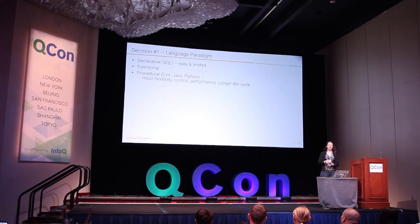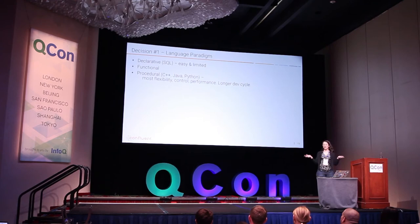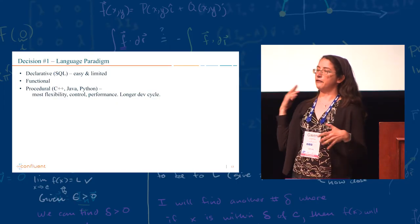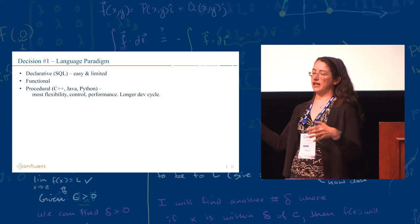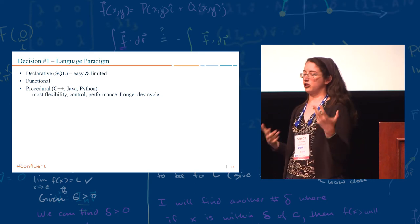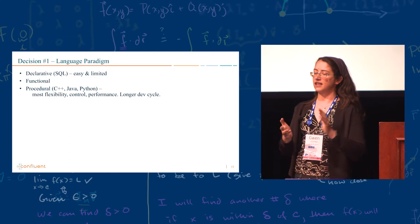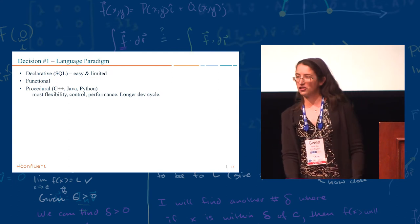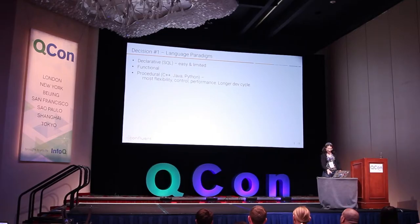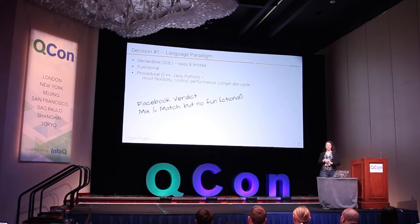So the first decision they had to make is the size of the language. And they had three choices. We can have a SQL. We can have a functional programming language. And we can have something procedural that kind of gives you more control and performance, but it's harder to write than SQL or functional. We already know what they chose. They decided to mix and match, but they don't do functional. So they have SQL for people who want fast and easy, but not a lot of control. And they have the C++ one for people who need a lot of control and a lot of performance.